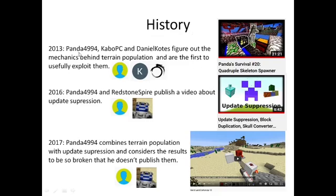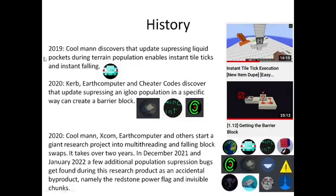The history of terrain population and update suppression is that both were basically discovered by Panda494. Panda494, Kabupizi and Daniel Kurz first figured out in 2013 how to abuse terrain population to generate specific structures. Three years later, Panda and Redstone Spire found update suppression. They thought about combining the two things but considered the results so far-reaching that they didn't publish them — they only have unlisted videos about it. It took until 2019 until somebody else had the idea of combining terrain population with update suppression.